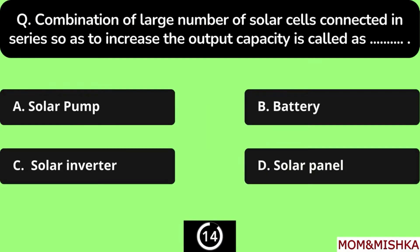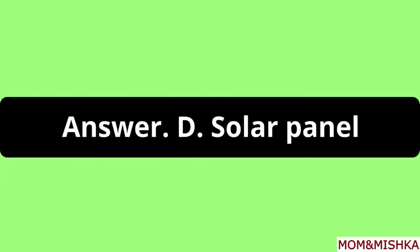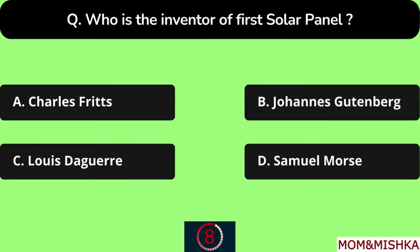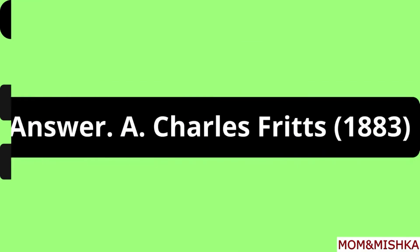A combination of a large number of solar cells connected in series so as to increase the output capacity is called a Solar Panel, Option D. Who is the inventor of the first solar panel? It is Charles Fritts, Option A. And he did this work in 1883.